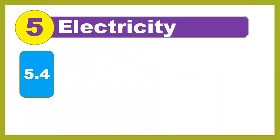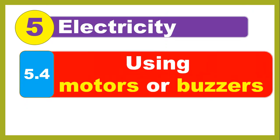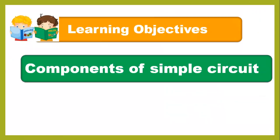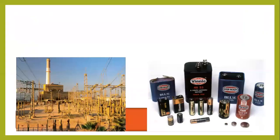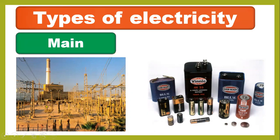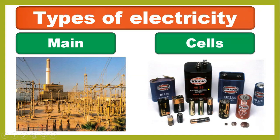As you know, this is unit number five. We are learning about electricity, using motors and buzzers. There are two types of electricity: the main electricity, which is very powerful, and you can also use electricity from cells or from batteries.